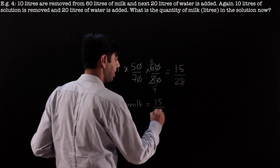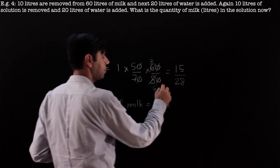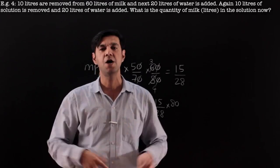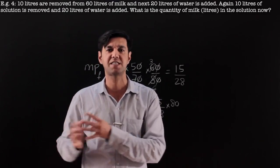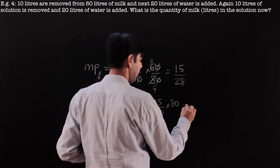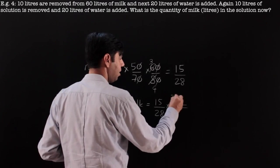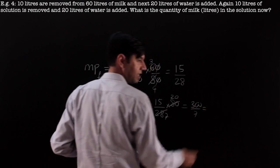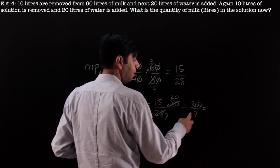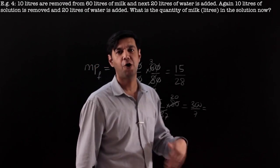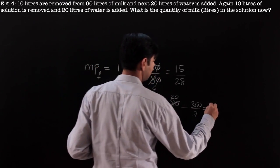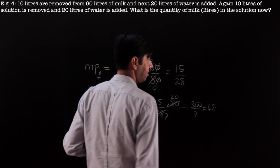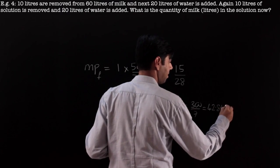Let's reduce: 1 × (50/70) × (60/80). Yes, this gets reduced — the proportion of milk in the end is 15/28. The question asks about quantity of milk: once you know the proportion you can find the quantity. It's 15/28 of the total, and what is the total? The total is 80 liters in the end — each addition increases by 10, there are two additions, so 60 becomes 80.